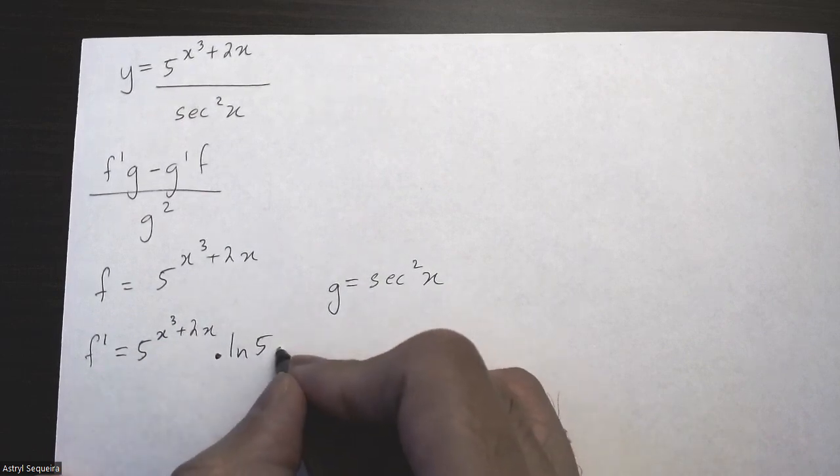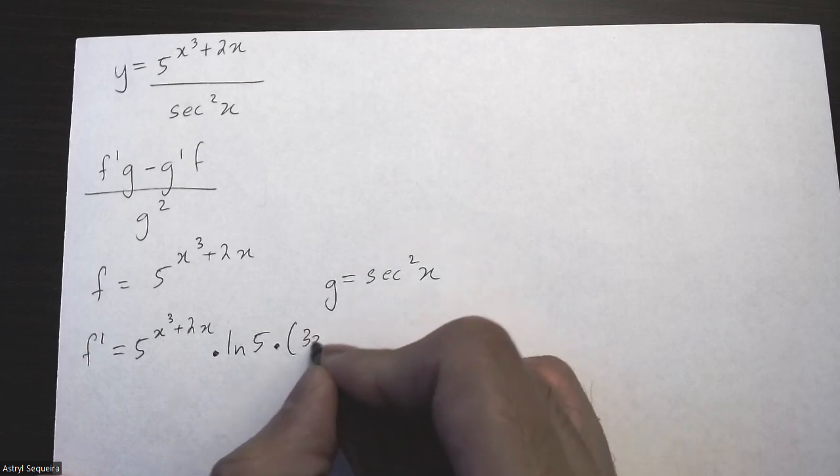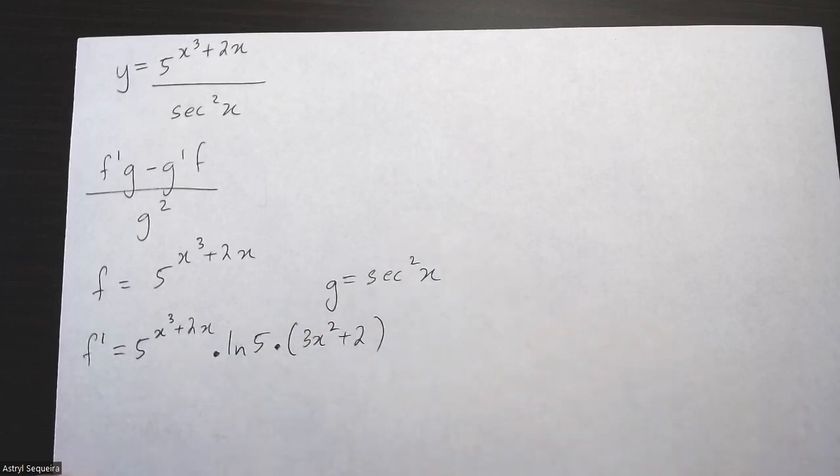According to the chain rule, we multiply by the derivation of the exponent, which is 3x squared plus 2.